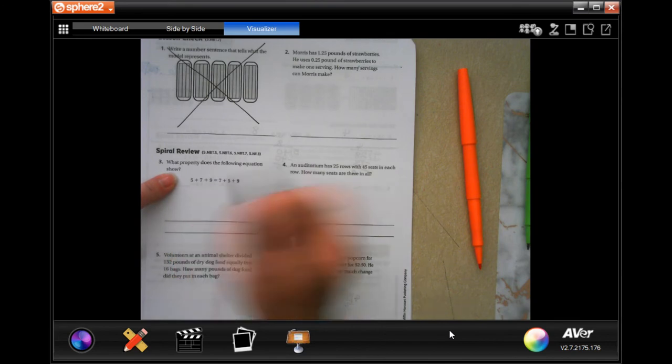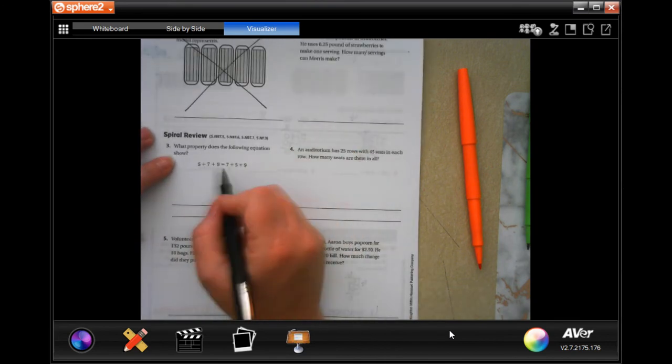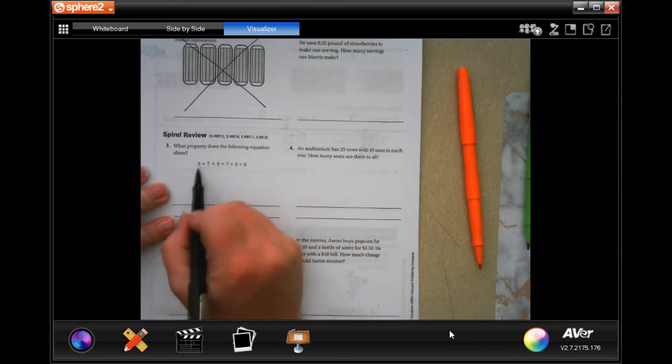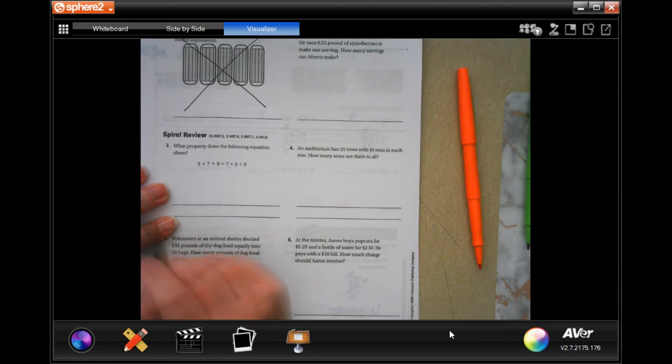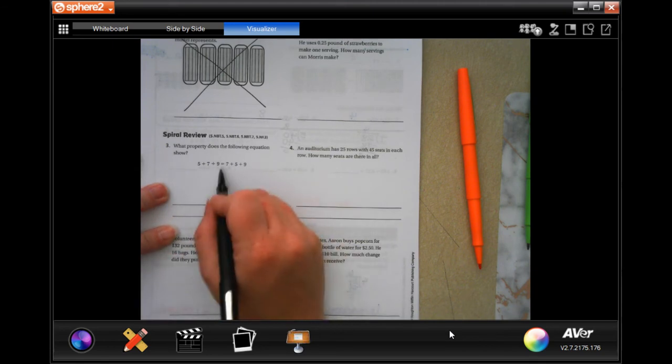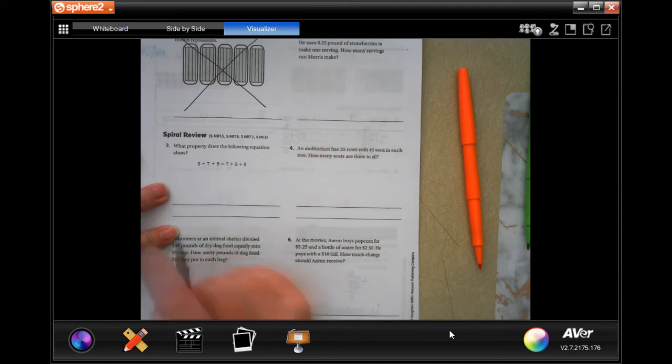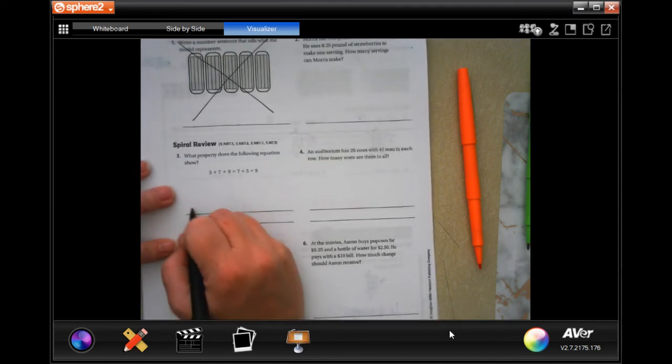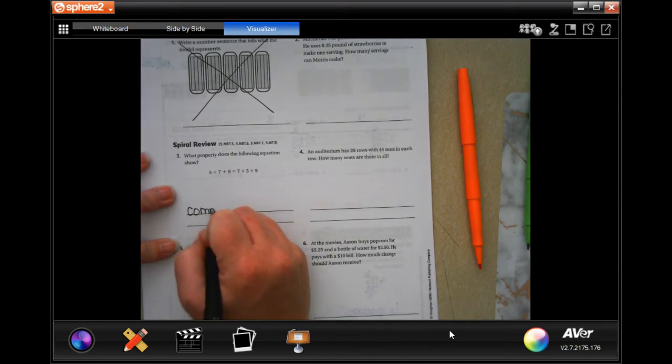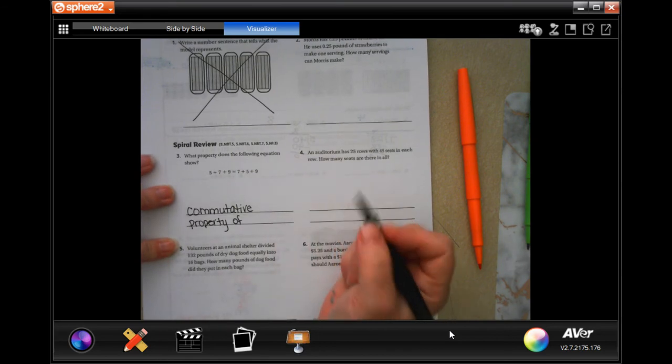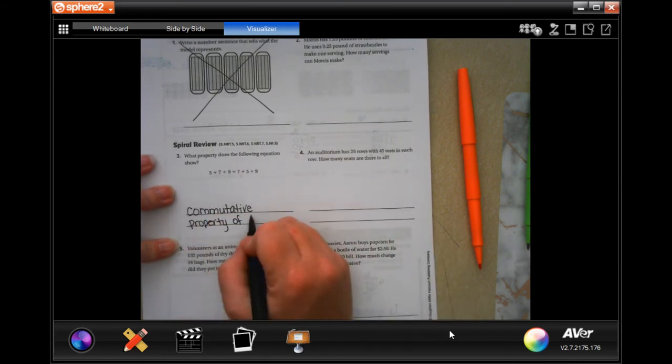What property did the following equation show? Well, we do have the same three numbers: we have 5, 7, and 9 on both sides, but those numbers moved around. When numbers move, it's just like when you go to school or when your parents go to work—you're commuting. So it is the commutative property, and you have to write of addition or multiplication. Since they're adding, we're going to put addition.